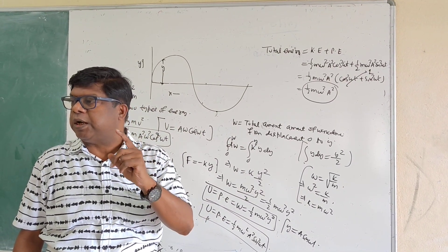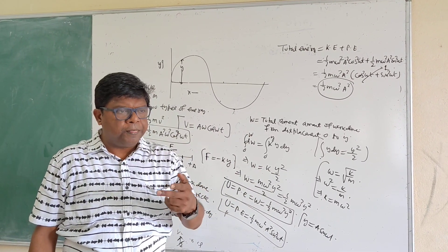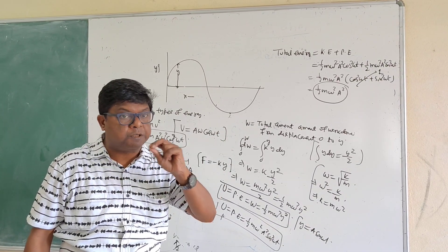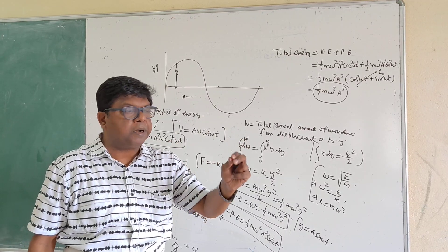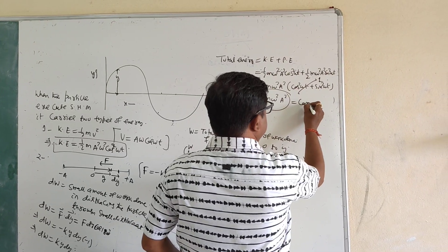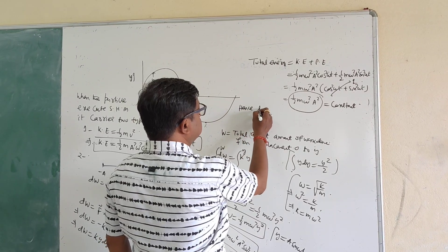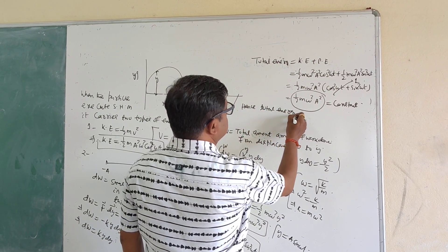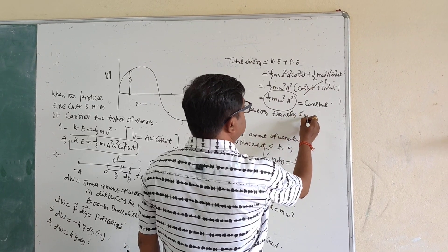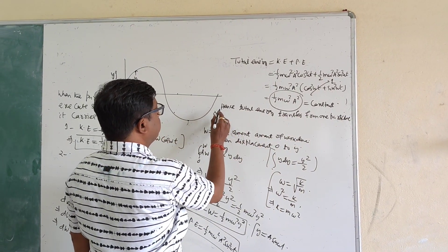The total energy ½mω²A² does not depend upon the instantaneous time t. Hence, when the wave propagates in the forward direction due to the transfer of energy from one particle to another, the total energy remains constant. Hence, the total energy transferred from one particle to another in a simple harmonic wave remains constant.